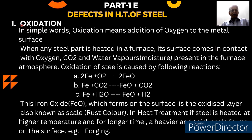The first defect I have selected is oxidation. What is oxidation and how does it occur? In simple words, oxidation means the addition of oxygen to the metal surface. When iron comes in contact with oxygen, it forms FeO — iron oxide. This iron oxide formation is the basic oxidation reaction.